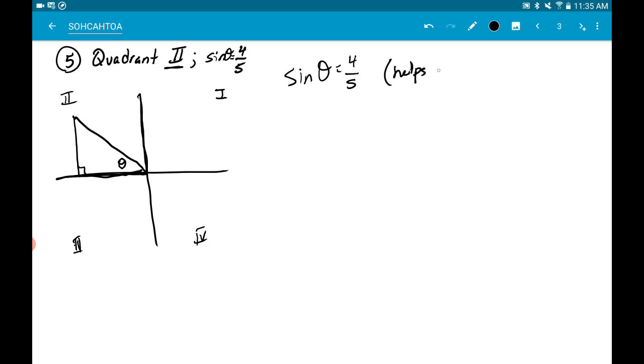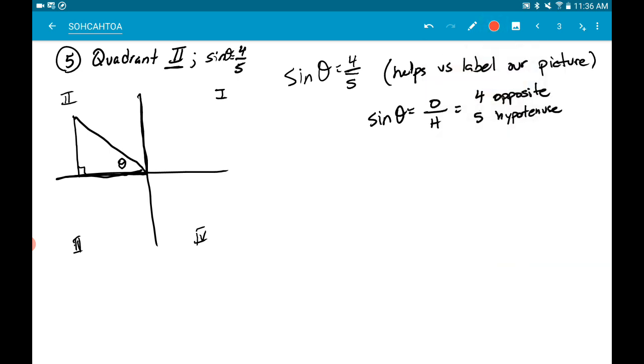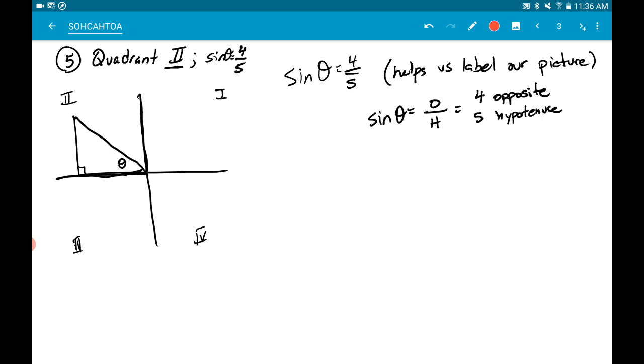And more specifically, it says that, I kind of miswrote this a little bit, sine of theta is 4 fifths. So it actually gives us one of the six answers. But this guy's going to help us label our picture. Because remember that our bread and butter is that sine of theta is always opposite over hypotenuse. So that means that 4 has to be the opposite, and 5 has to be the hypotenuse. So on my triangle, I'll use a different color to make it pop. But 4 is the opposite, 5 is the hypotenuse.